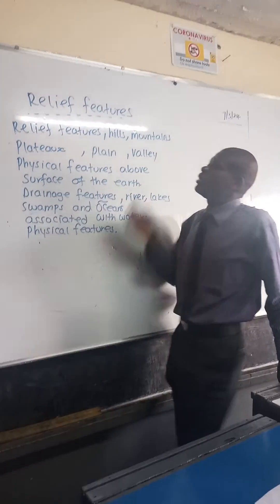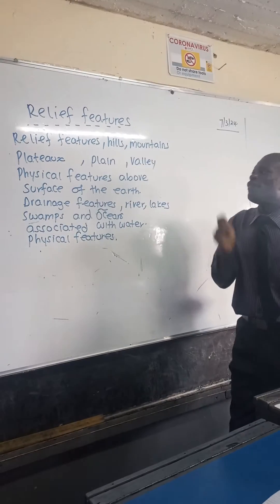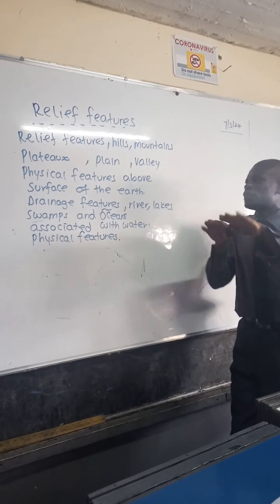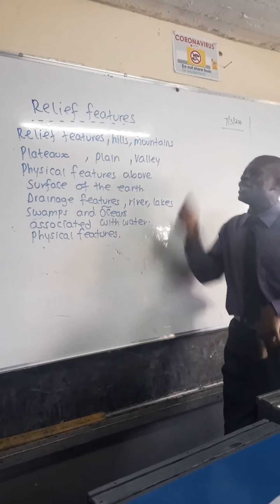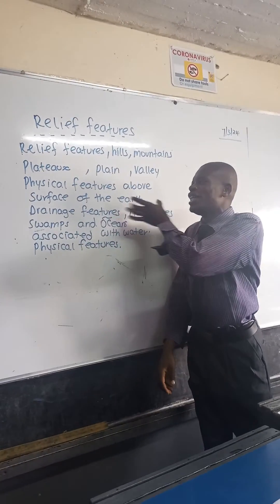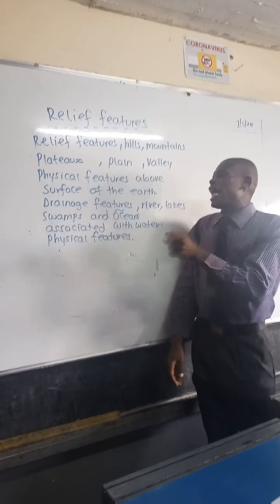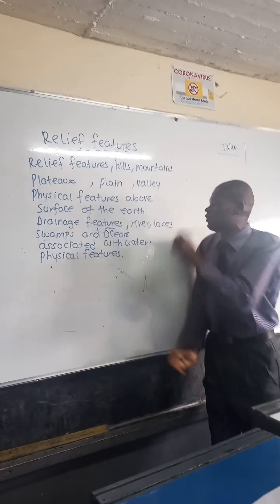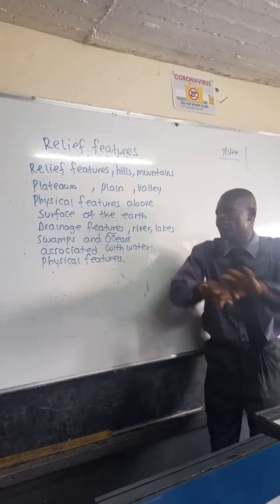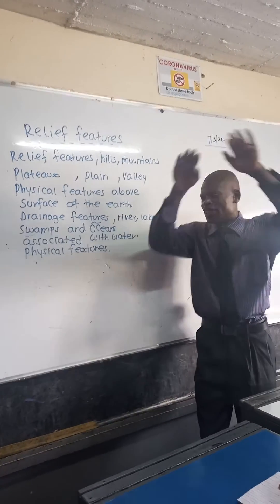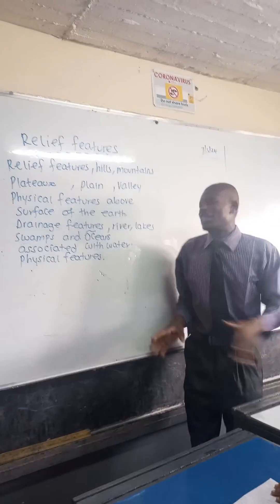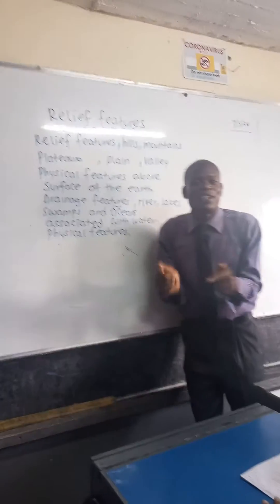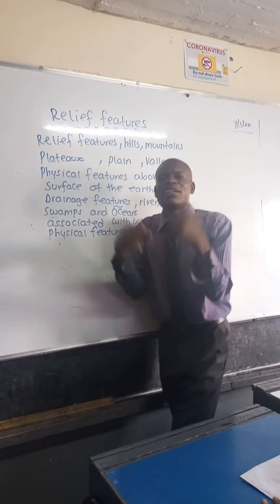So let us review. Relief features: hills, mountains, plateaus, plains, valley — physical features above the surface of the earth. Drainage features: river, lake, swamps, and ocean — associated with water. Physical features.